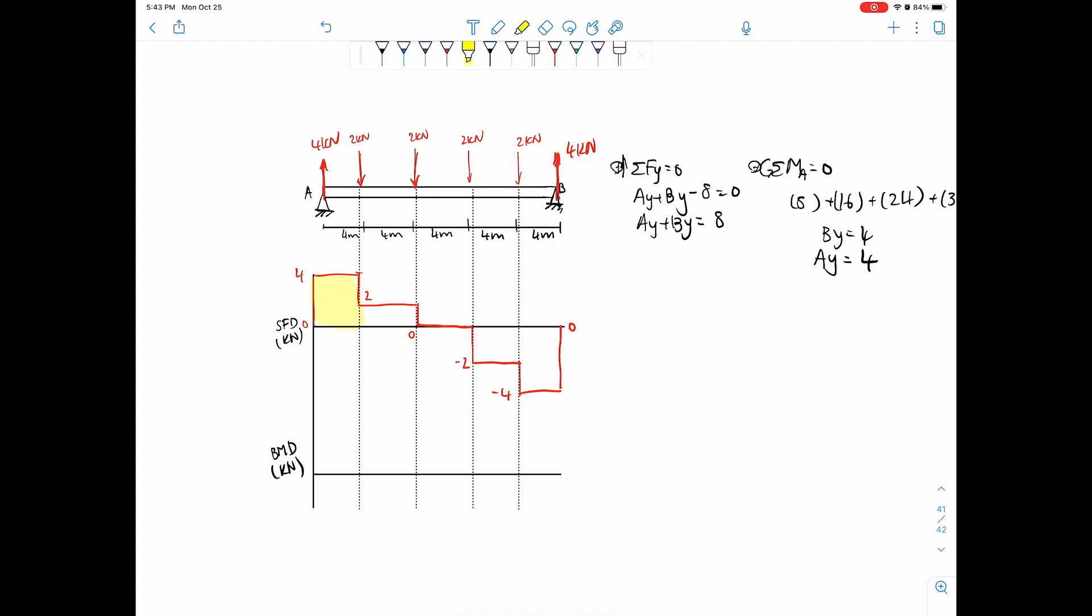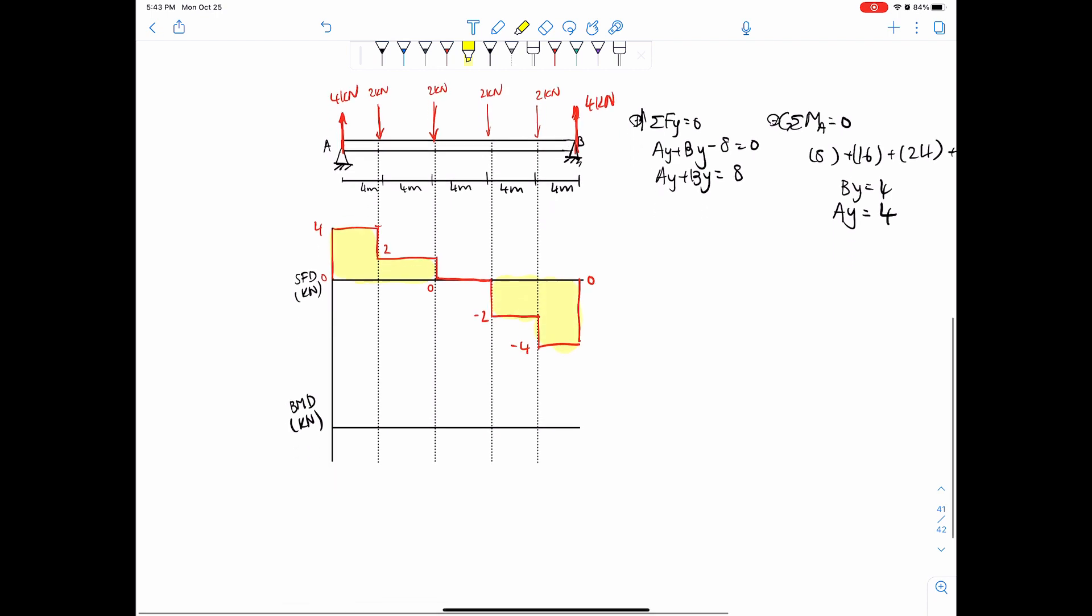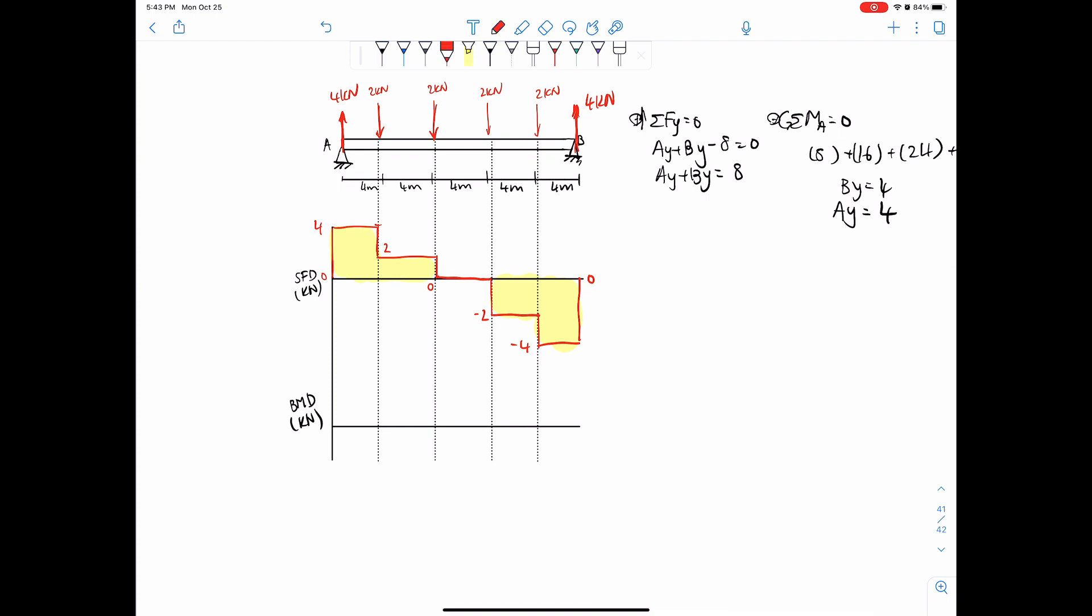That's your shear force diagram, easy peasy. Now, how to draw the bending moment diagram? Area under the curve. First we're going to find this area: four times four is sixteen, then two times four is eight, negative eight, negative sixteen, symmetrical. So if we give a benchmark, this is sixteen and this is eight. We go up to sixteen.